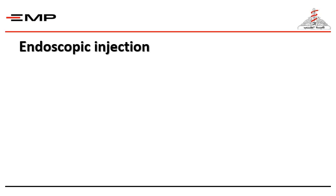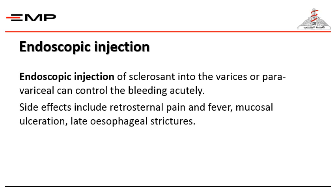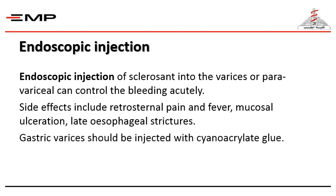The definitive management of gastric varices is injection with cyanoacrylate glue. Endoscopic injection of a sclerosant into or paravariceally can also control the bleeding. Side effects include retrosternal pain, fever, mucosal ulceration, and late esophageal strictures due to the action of the sclerosant. Gastric varices should be injected with cyanoacrylate glue, as we cannot band-ligate gastric varices.